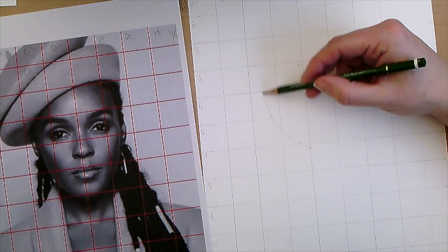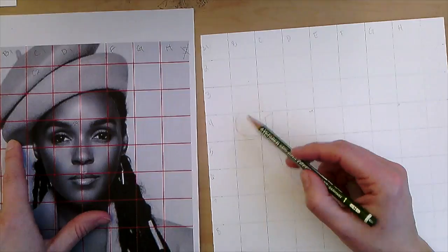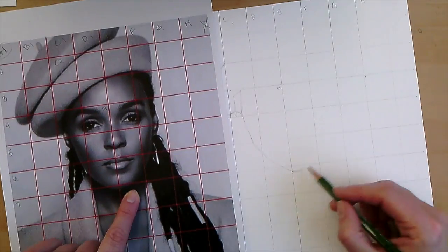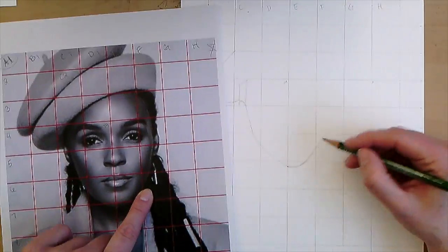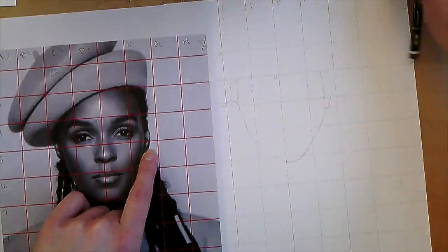I'm using my ruler to help me see just how far along on those lines the chin would touch. I'm going along the edge, keeping my finger on the drawing at all times—the finger I'm not drawing with—on the reference image so I don't get lost. I'm just focusing on the edges of my drawing today, making sure I'm in the right box. I'm in like F3 right there.